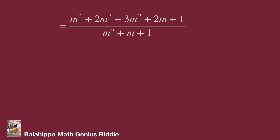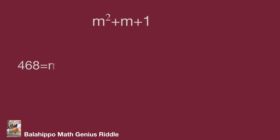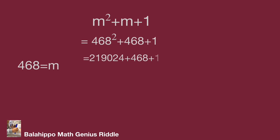After that, the fraction can be rewritten as (m squared plus m plus 1) multiplied by (m squared plus m plus 1), over (m squared plus m plus 1). Eliminating the common factor m squared plus m plus 1, the result simplifies to m squared plus m plus 1. Since 468 equals m, the answer is 468 squared plus 468 plus 1, which equals 219,493. That's the value. Do you get the same answer? Hope you enjoyed the video. Thank you.